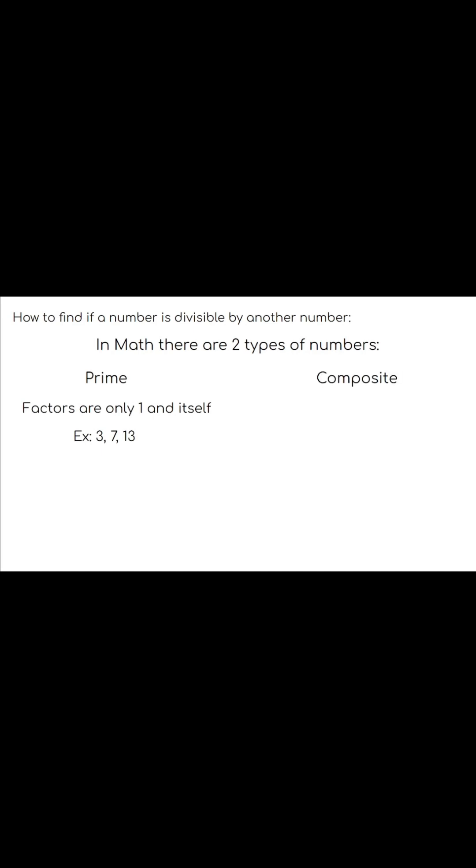The second type of numbers are composite numbers. These numbers have more than two factors. For example, we have 6, 10, and 15.